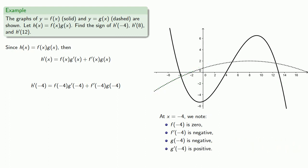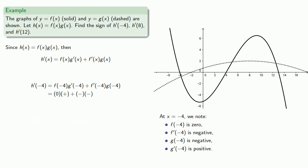So h prime of negative 4 is 0 times a positive number, plus a negative number times a negative number. Zero times a positive number is just 0, and the product of two negatives is positive. So h prime of negative 4 is positive.